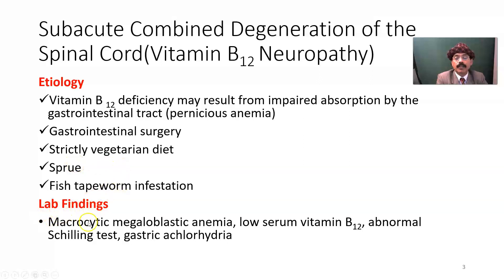Lab findings will show macrocytic megaloblastic anemia, low serum vitamin B12 levels, abnormal Schilling test, and gastric achlorhydria.